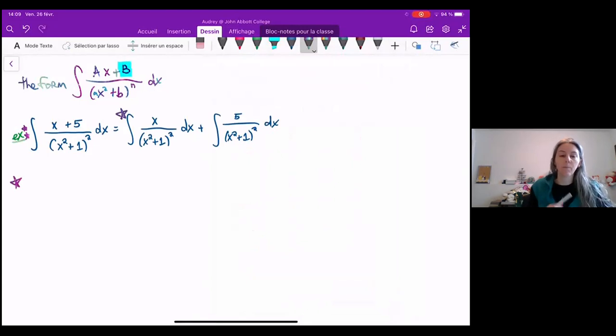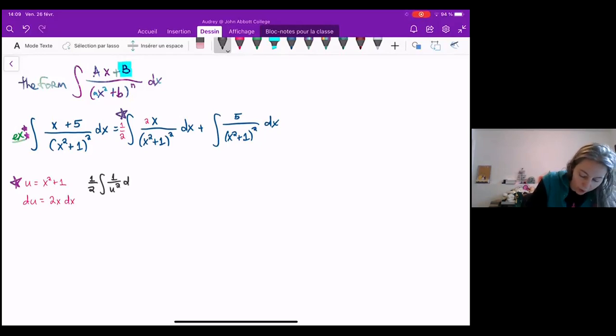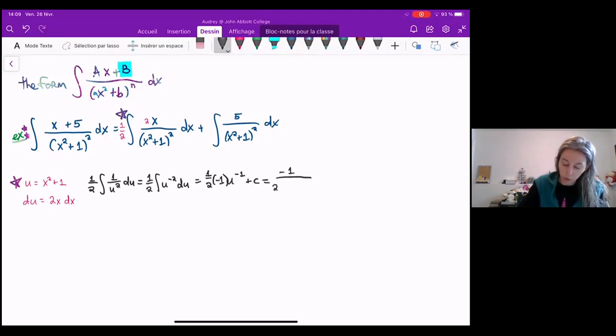We saw that actually this is just a simple substitution because the derivative of x squared plus 1 is 2x, and I have that x in my numerator. So here, we'll do our simple substitution u equals x squared plus 1, du equals 2x dx. So I'm going to multiply by 2, divide by 2, and end up with 1 half the integral of 1 over u squared. And if we move that up, we can see that this is actually a known form. And so we end up with 1 half u to the negative 1 times negative 1 plus c, which gives me a negative 1 over 2 times x squared plus 1 plus a constant.